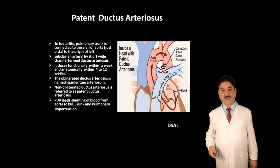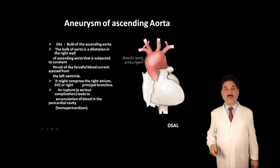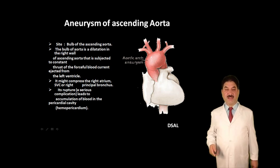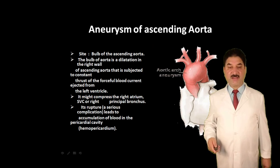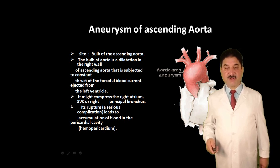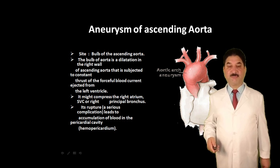Aneurysm of the aorta: the common site of aneurysm of the thoracic aorta is the bulb of the ascending aorta. The bulb is a dilatation in the right wall of the ascending aorta, subjected to constant thrust of the forceful blood current ejected from the left ventricle. It might compress the right atrium, superior vena cava, or right principal bronchus. Its rupture is a serious complication leading to accumulation of blood in the pericardial cavity.